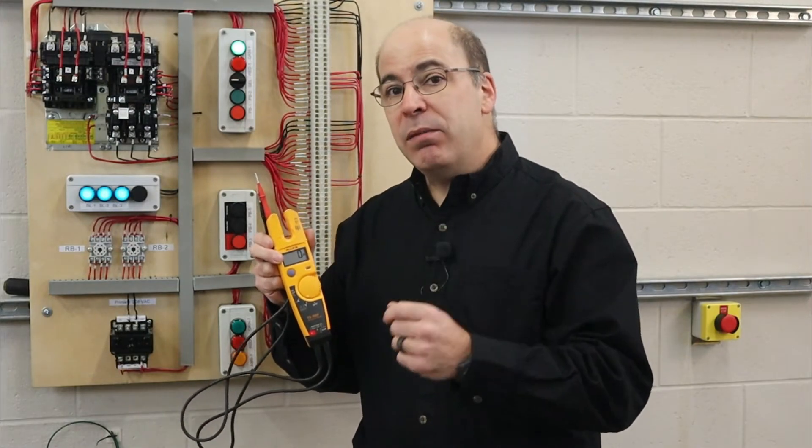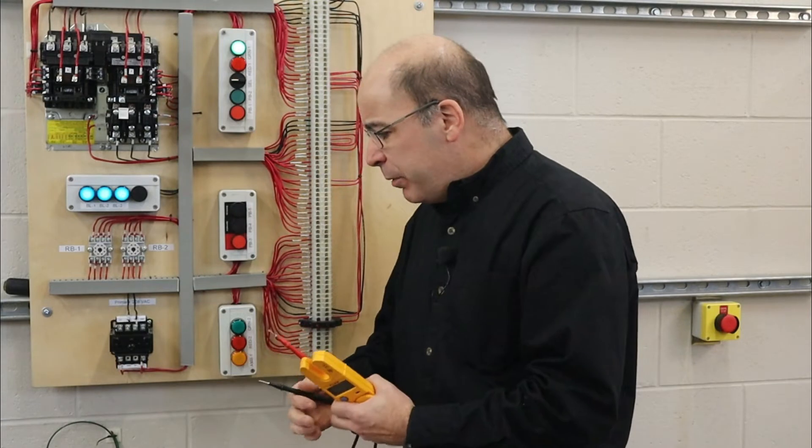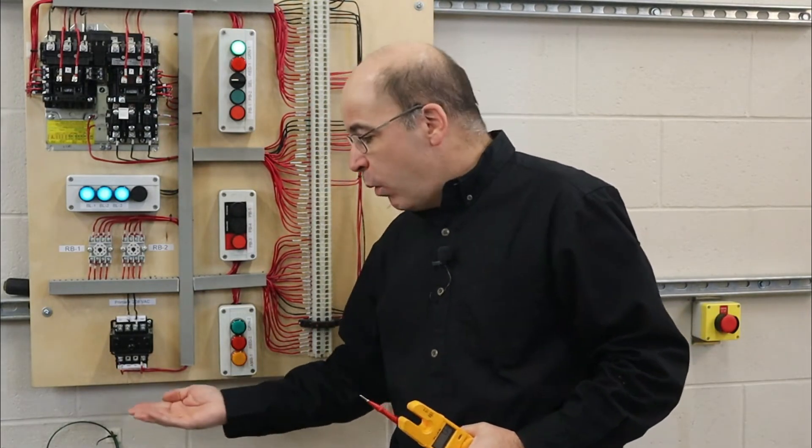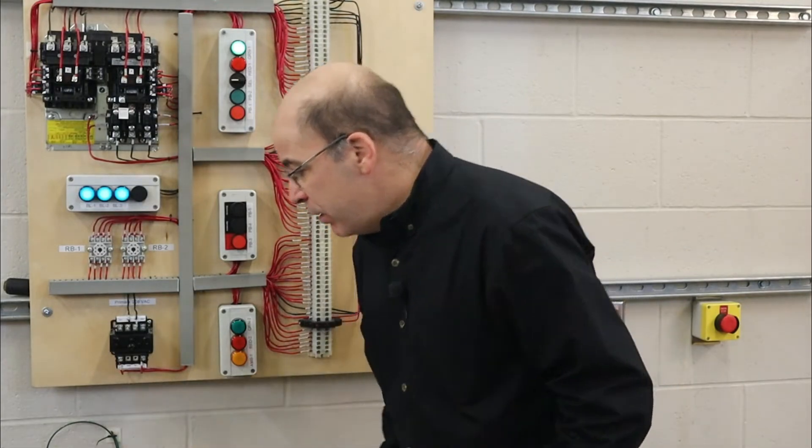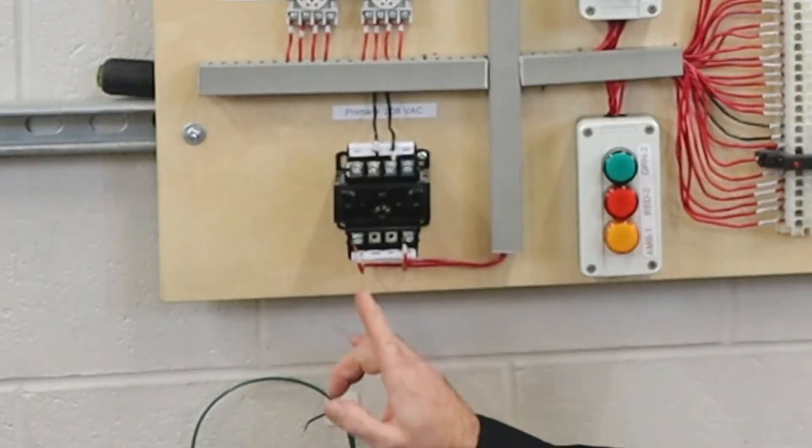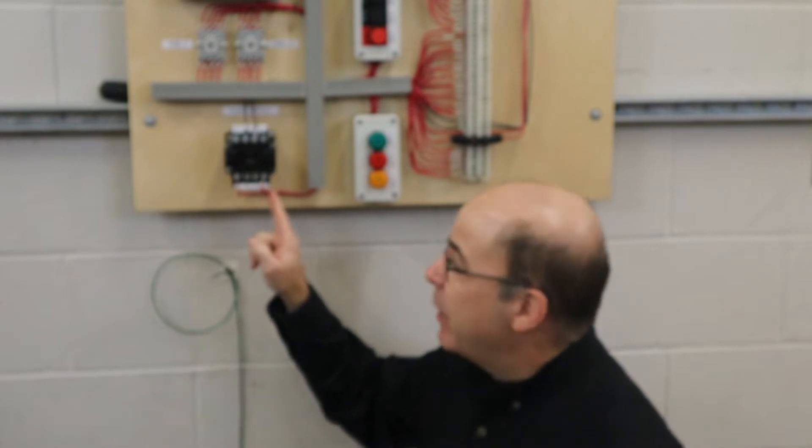How do we effectively take measurements when dealing with a system like this where we have a floating neutral? Now why do we call this a floating neutral? It's due to the fact that the transformer, the secondary, is not bonded. It's not going to ground. All we have is the leads on the secondary X1 and X2 respectively that are completing a circuit. That is known in technical terms as a floating neutral. It's unbonded.